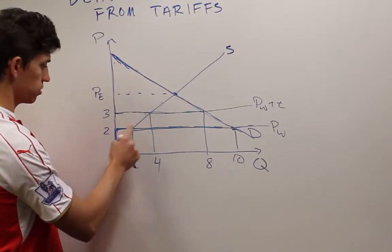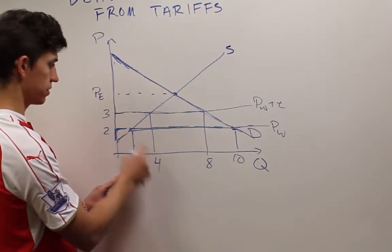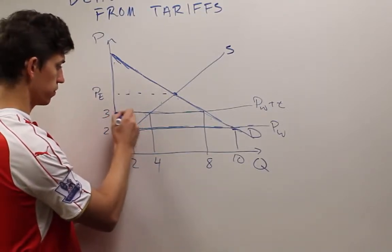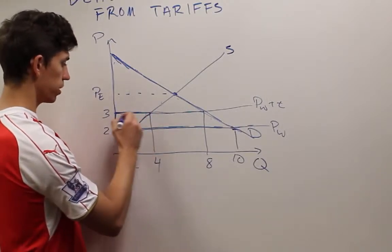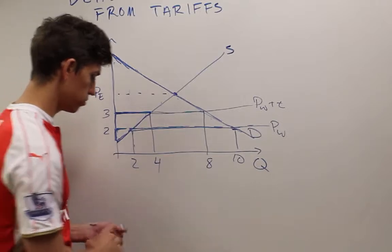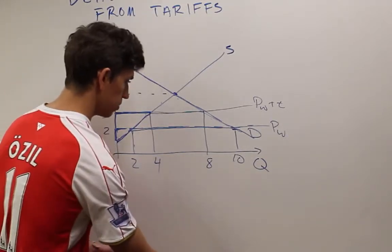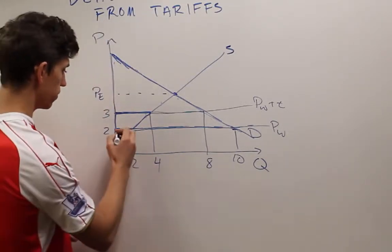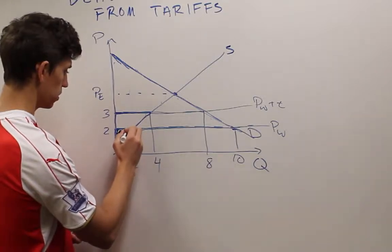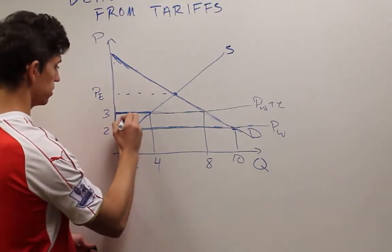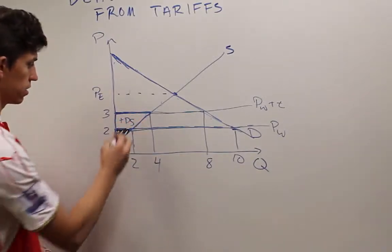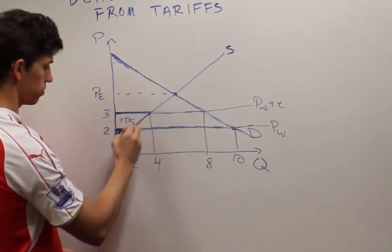Now domestic producers are producing 4, selling them for $3 each. They get this new slightly bigger triangle. I'll draw this, the black was the old down here, and now we added some. This is the additional producer surplus that's added. So now it becomes this whole big triangle right here.